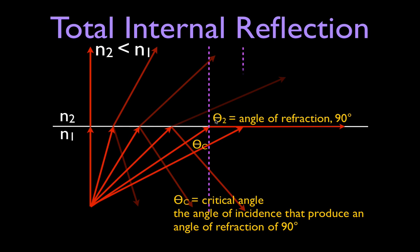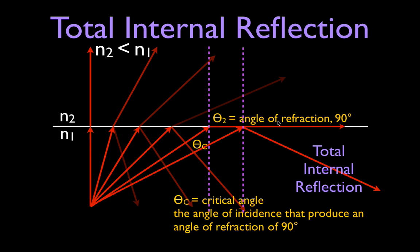If we increase the angle of incidence just a little bit more — anything over the critical angle — then none of the light gets refracted across the boundary, none travels along the boundary, and all of the light, totally all of it, will be internally reflected. That's what we call total internal reflection. It occurs when the angle of incidence is greater than the critical angle, and all of the light is reflected off that boundary back into the material from which it came.